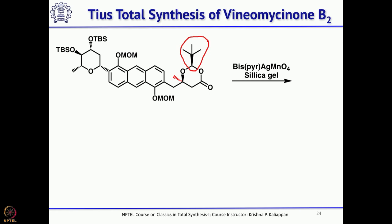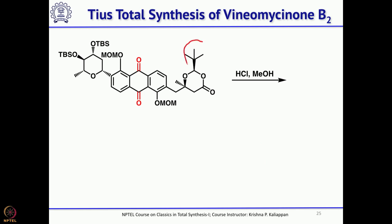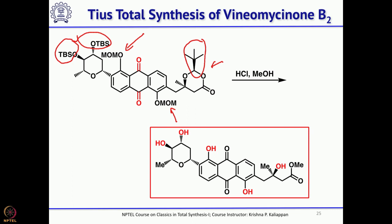What needs to be done next is to oxidize the middle ring of this anthracene — in the natural product it is anthraquinone, meaning this diene should be oxidized to the diketone. That was done to get the corresponding disubstituted anthraquinone. Then you have to remove the tert-butyl group, both MOM groups, and both TBS groups. Treatment with HCl removes these protecting groups, giving the methyl ester; MOM groups and TBS groups also go in a complete global deprotection followed by esterification, all done in one step to complete the asymmetric total synthesis of Viniomycinone B2.